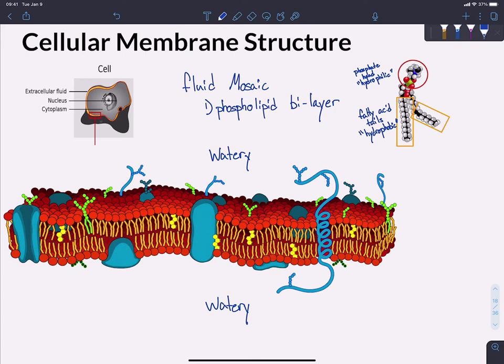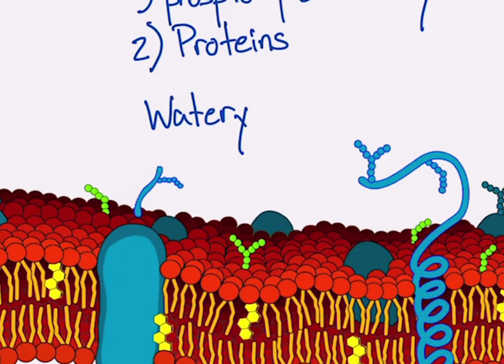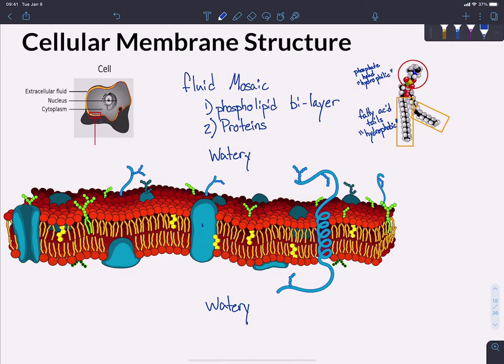The other part of the membrane, shown here in blue, is proteins. Those proteins play a variety of roles. We're only going to focus on a few of them in this class, but we should acknowledge that they're there. There's a large blue one in the middle, and others as well. We're going to look at a couple of them and what they do. But this is the overall structure of the cell membrane.